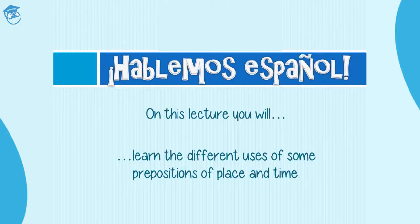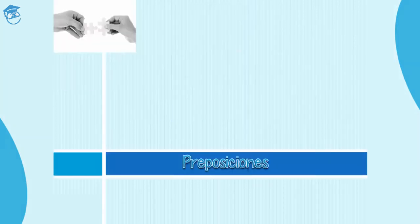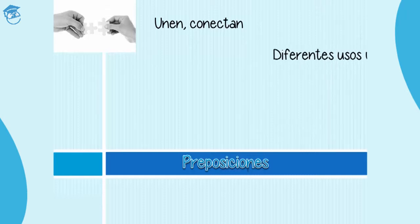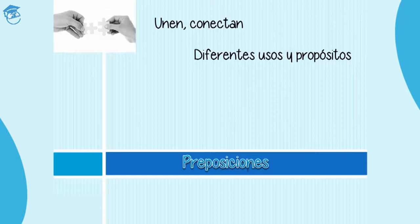Pueden cambiar la intención o la función de tu frase. Así que veamos las preposiciones de lugar y de tiempo. En videos pasados vimos un poco las preposiciones de lugar, pero ahora recordemos qué son preposiciones. Las preposiciones son palabras cortas que unen y conectan ideas en una oración. They are words, generally short words, that connect and link ideas in a phrase. They can have different uses and purposes according to your intention. Según tu intención pueden tener diferentes usos y propósitos.